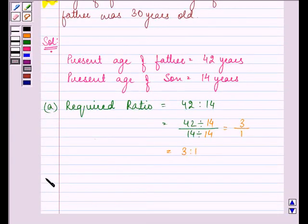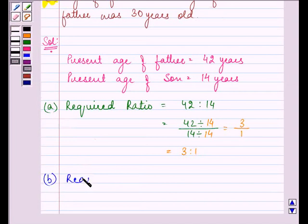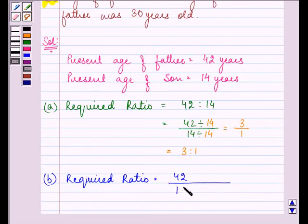Now, proceeding on to the B part. Here, the required ratio is age of father to the son when he was 12 years old. When son was 12 years old, that means 2 years ago, father will also be—he should be 40 and not 42.